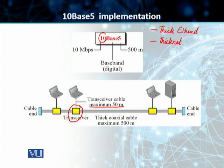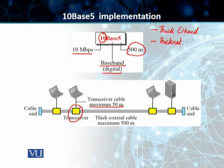The '10' in 10Base5 represents the data rate — 10 megabits per second — that this implementation supports. 'Base' represents that we are using a baseband signal, a digital signal. And '5' represents that the maximum length of the transmission medium, the thick coaxial cable, is 500 meters. If you go beyond 500 meters, the signal starts degrading. If more than 500 meters is needed using 10Base5, we will need to use repeaters, which regenerate the signals.